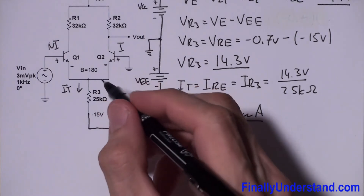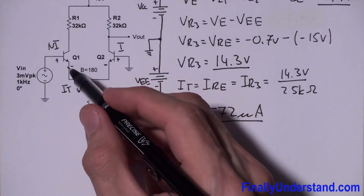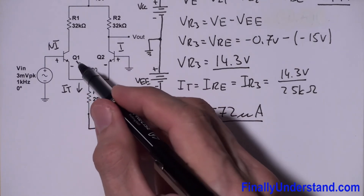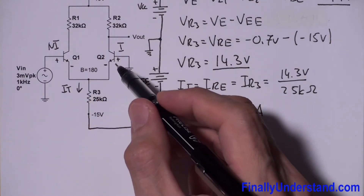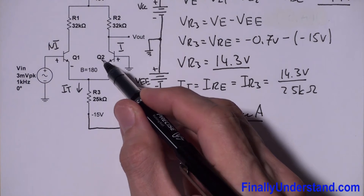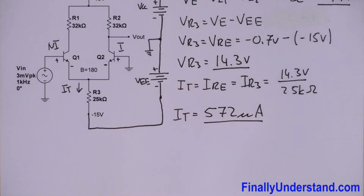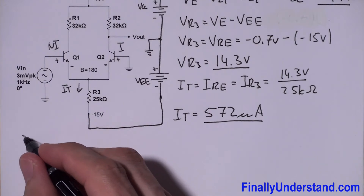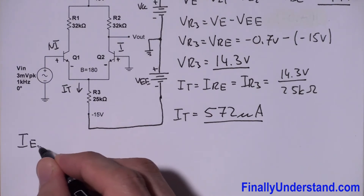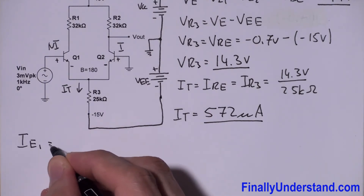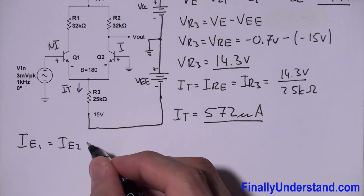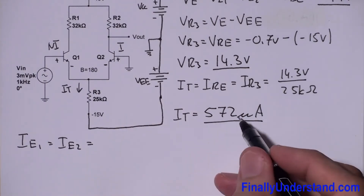Next, keep in mind that the current through the emitter of transistor Q1 and the current through the emitter of transistor Q2 are going to be equal. So we write that IE1 equals IE2, and each is simply half the tail current.